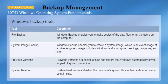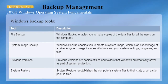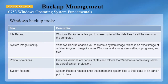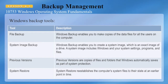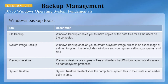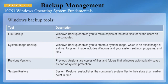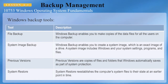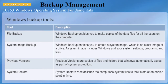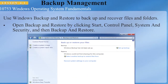Here are some of the Windows backup tools available. File backup: Windows Backup enables you to make copies of data files for all users on the computer. System image backup: Windows Backup enables you to create a system image, which is an exact image of a drive including Windows, system settings, programs, and files. Previous versions are copies of files and folders Windows automatically saves as part of system protection. System Restore reestablishes the computer's system files to their state at an earlier point in time.